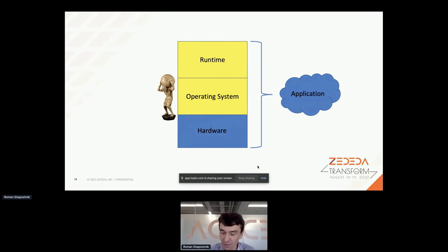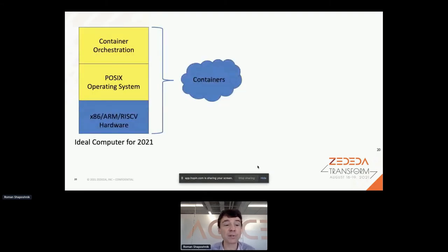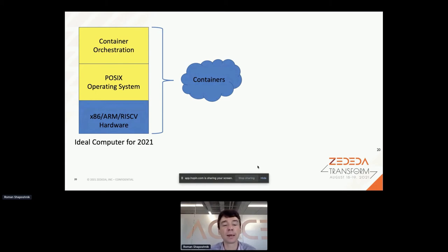At the end of the day, we don't want our operating systems to be big or all-powerful. We just want enough of an operating system to support our favorite runtime. The ideal computer for 2021 has hardware that is typically x86, ARM, or RISC-V - we're down to three hardware variants at this point. We typically have some kind of POSIX operating system, and on top of that a container orchestration system, with applications expressed as containers.